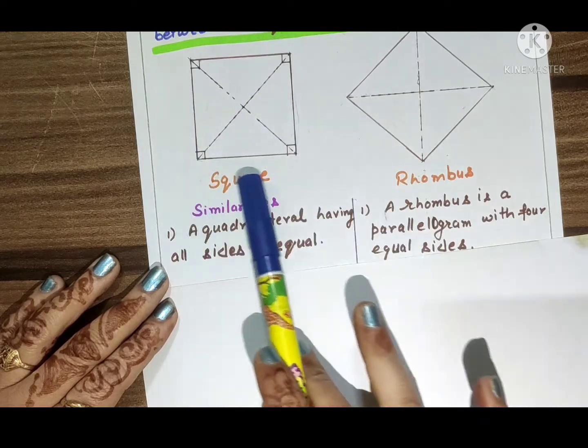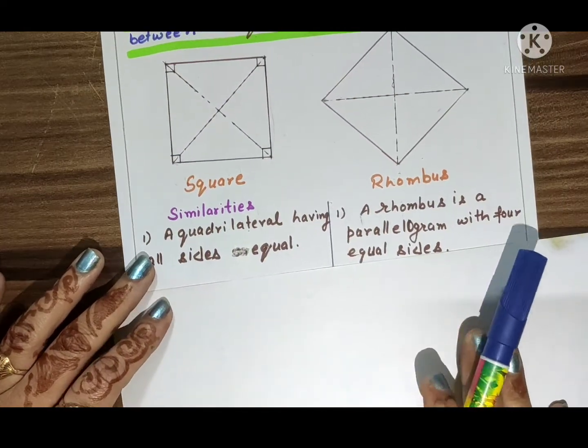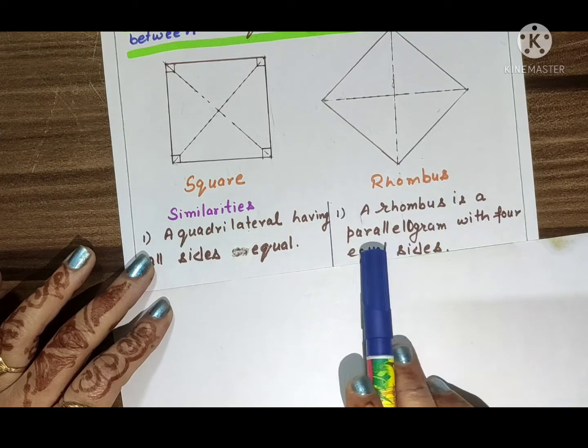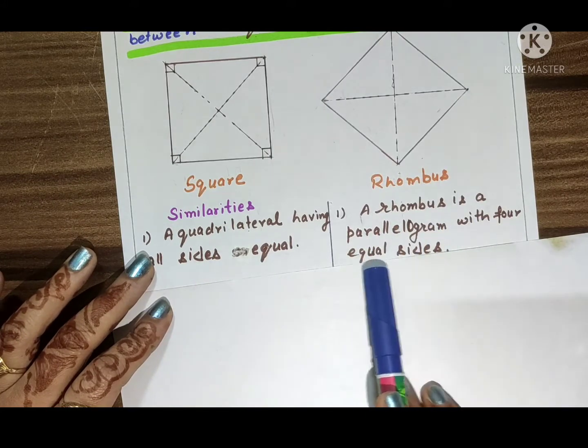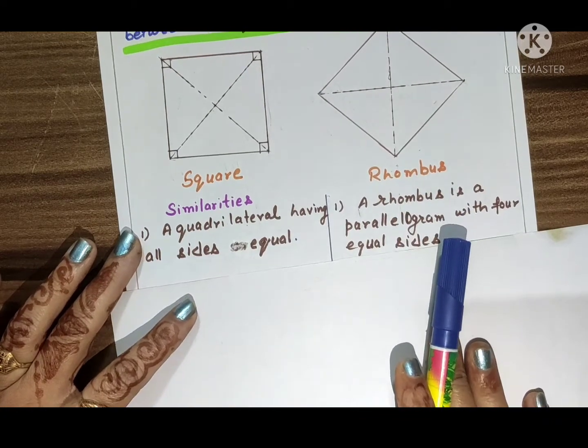You know students, all the sides in a square are equal. A rhombus is a parallelogram with four equal sides.